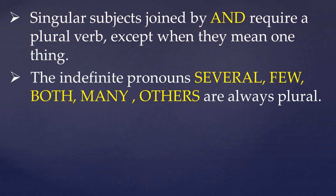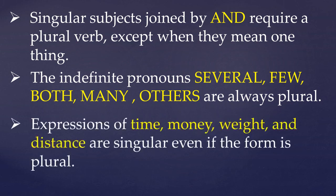Next rule: the indefinite pronouns 'several', 'few', 'both', 'many', 'others' — these pronouns are always plural, meaning they always take the plural form of the verb. Next rule: expressions of time, money, weight, and distance are singular even if the form is plural. Even if their form is plural, but the meaning is singular, then we use the singular form of the verb.